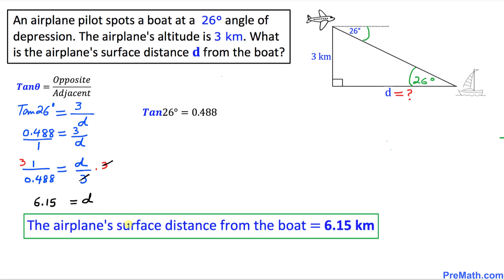Thus the airplane's surface distance from the boat equals 6.15 kilometers, and that is our final answer. Thanks for watching and please don't forget to subscribe to my channel for more exciting videos.